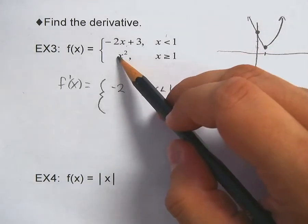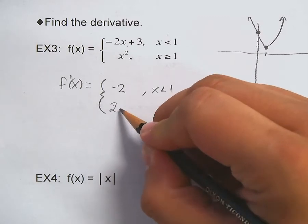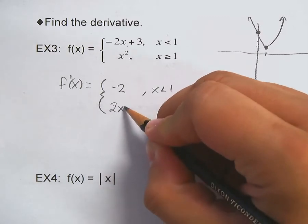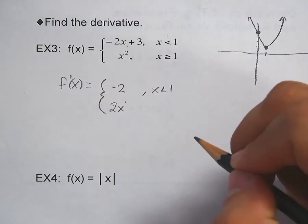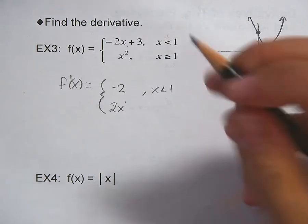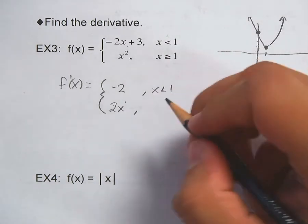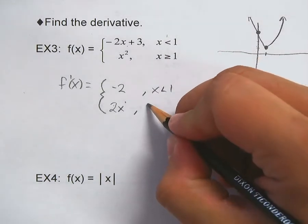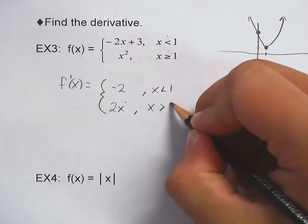The derivative of x squared: drop your power and subtract one from your power, so that's two x to the first power. We don't need to write the exponent of one, and that's going to be where x is greater than one.